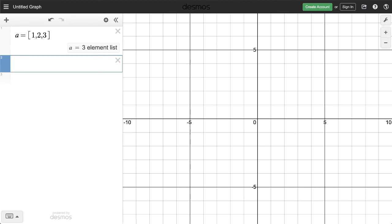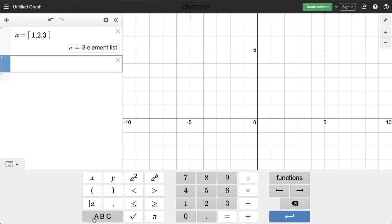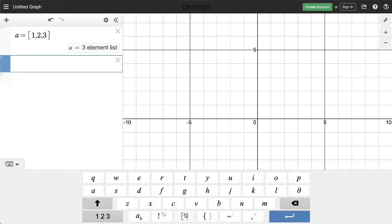Square brackets are usually near the top right of the keyboard. You can also find them on the ABC menu in the Desmos keypad. They're right here at the bottom.